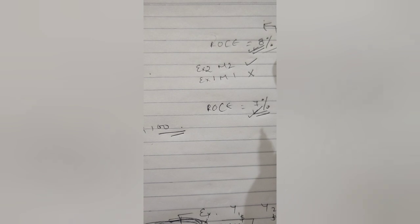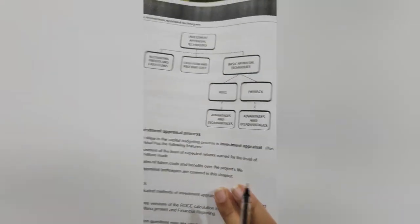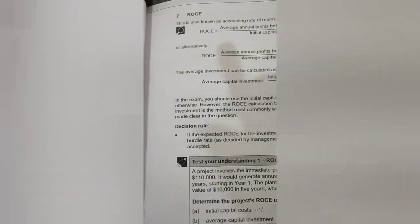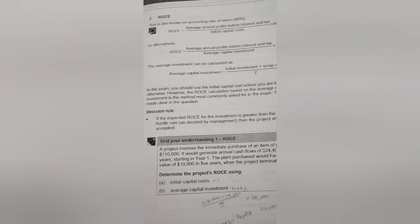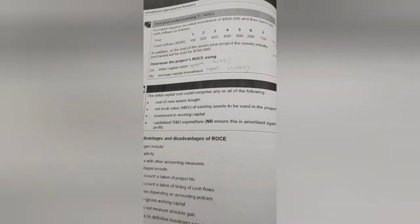I hope you understand the concept of ROC from this explanation. We are using the Kaplan book for ACCA FM and today I have discussed the chapter on basic investment appraisal techniques. Try Test Your Understanding 1 on your own; if you are not able to calculate the sums, we will check in the next class. Do let me know in the comments if you need help with concepts. Next, we will look at cash flows, relevant costs, and everything else in the next lecture.